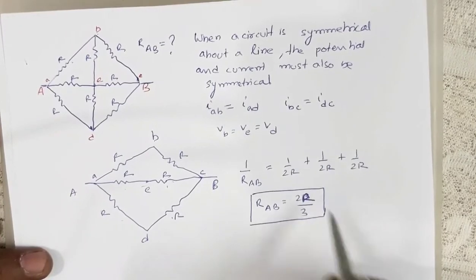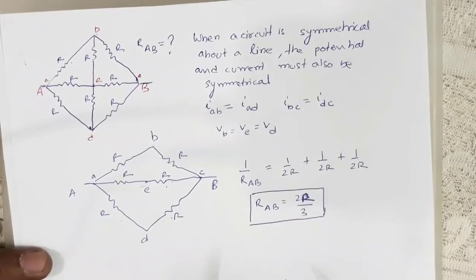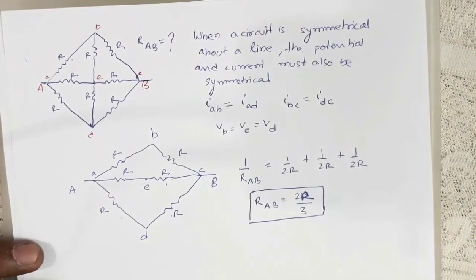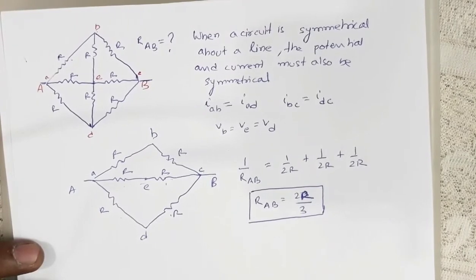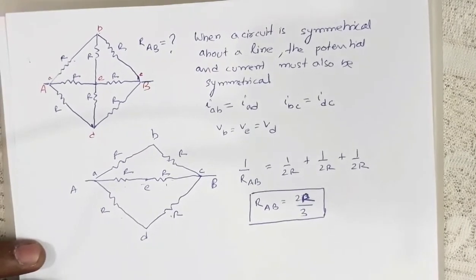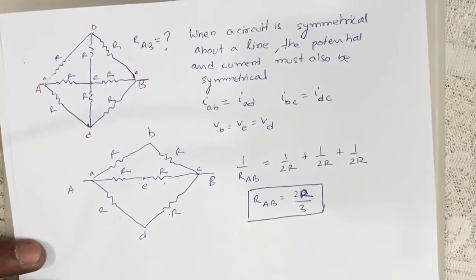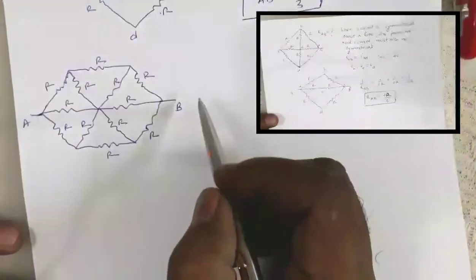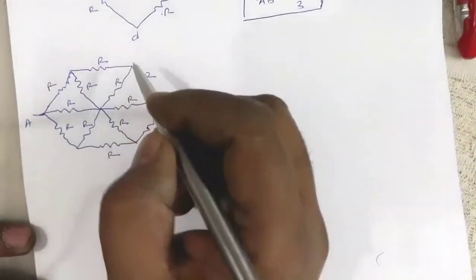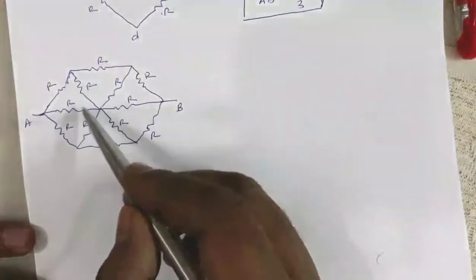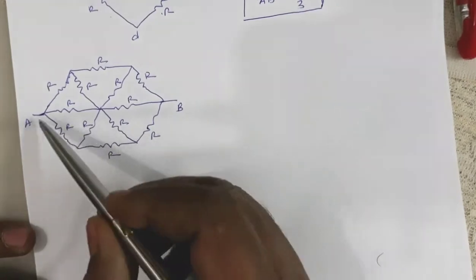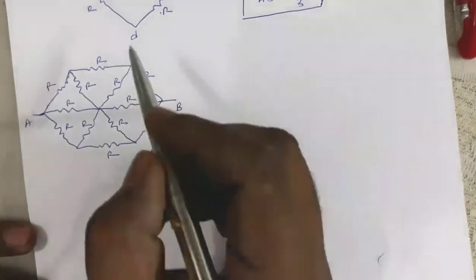So R_AB is equal to 2R/3. This is the equivalent resistance between A and B. Now here is another circuit where all the resistors are equal and identical, and you have to find the equivalent resistance between A and B.